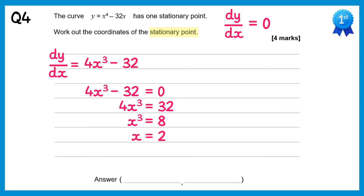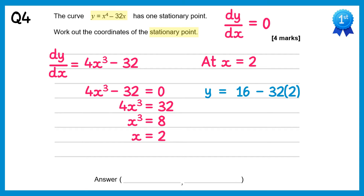We found the x coordinate but we also need the y coordinate. We substitute x equals 2 back into the equation of the curve. So y equals 2⁴ minus 32 times 2. 2⁴ is 16 and 32 times 2 is 64, so 16 minus 64 is negative 48. So the stationary point has coordinates (2, −48).